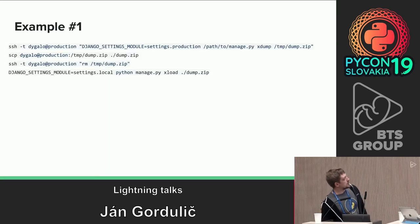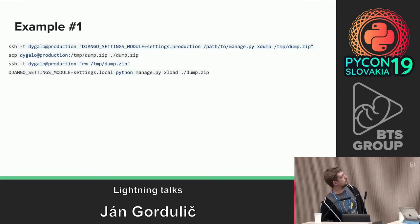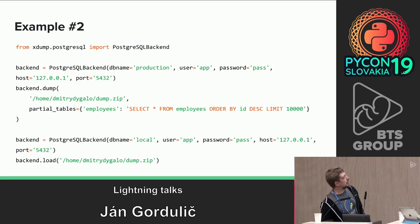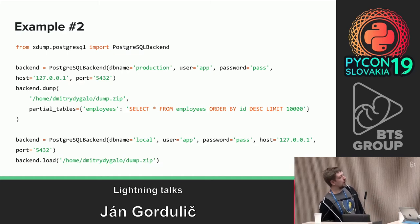A couple of examples. When I need some data from production, I use this kind of script - I just dump the data I need with some settings, then download it and load it locally. It has a Python API. You need to initialize the backend, make a dump. You can specify some query that you would like to run - like the last 10,000 employees. And it loads all the related data from other tables recursively. You don't need to care about all these related links, and then just load it on your local machine.